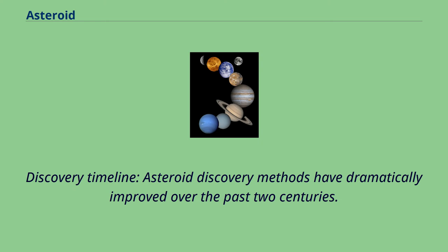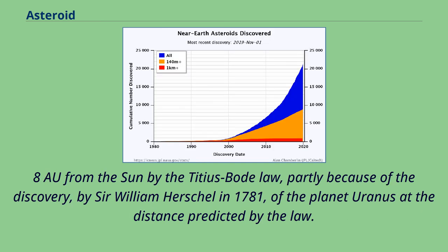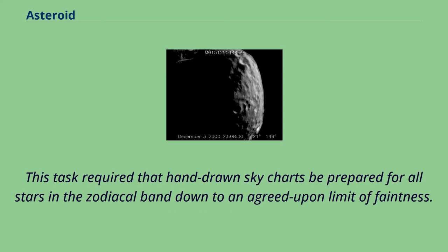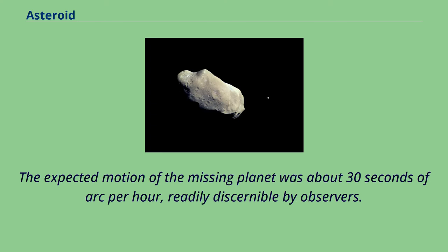Asteroid discovery methods have dramatically improved over the past two centuries. In the last years of the 18th century, Baron Franz Xaver von Zach organized a group of 24 astronomers to search the sky for the missing planet predicted at about 2.8 astronomical units from the Sun by the Titius-Bode law. This task required hand-drawn sky charts for all stars in the zodiacal band down to an agreed-upon limit of faintness; on subsequent nights the sky would be charted again and any moving object would hopefully be spotted. The expected motion of the missing planet was about 30 seconds of arc per hour, readily discernible by observers.